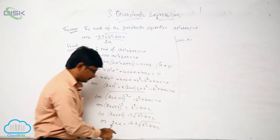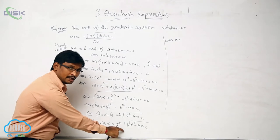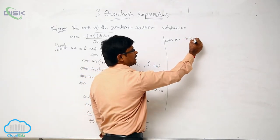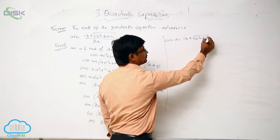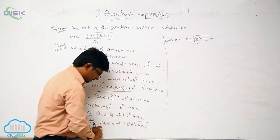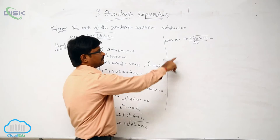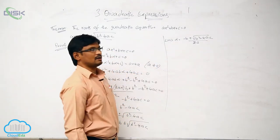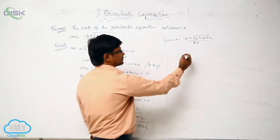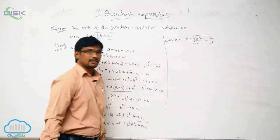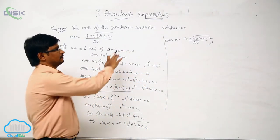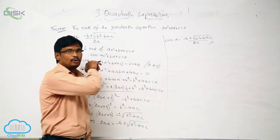Shifting B to the RHS: 2a·alpha = minus B plus or minus the square root of B² − 4ac. Then shifting 2a to the RHS, alpha equals minus B plus or minus the square root of B² − 4ac, all divided by 2a. This is the method of finding the roots of a quadratic equation.